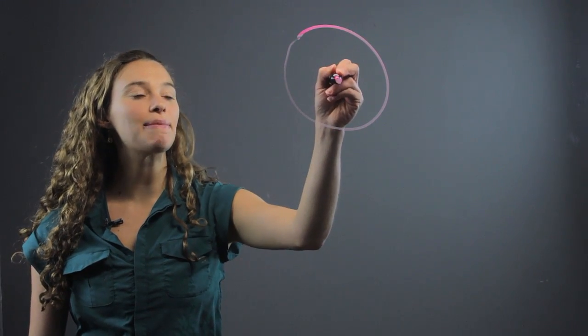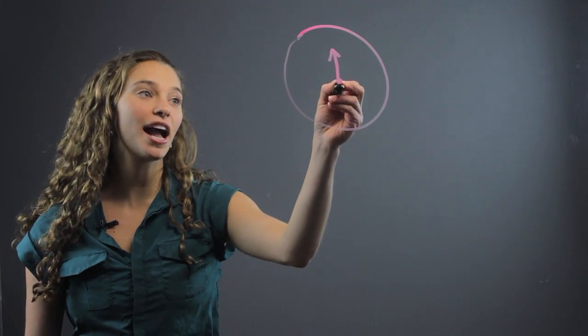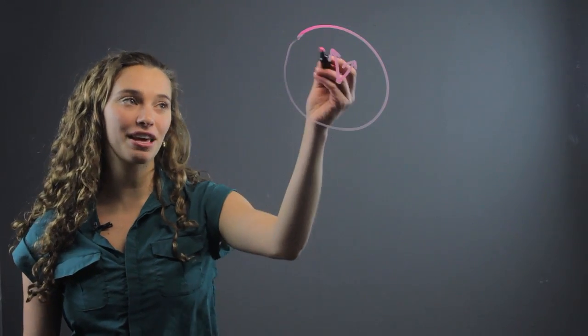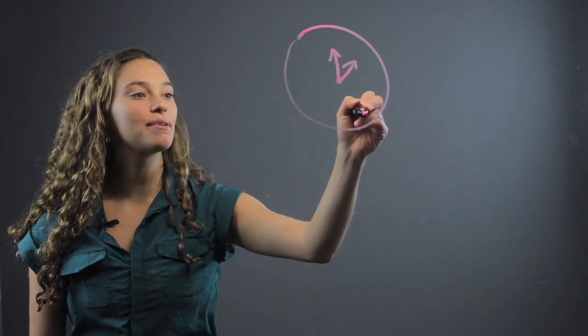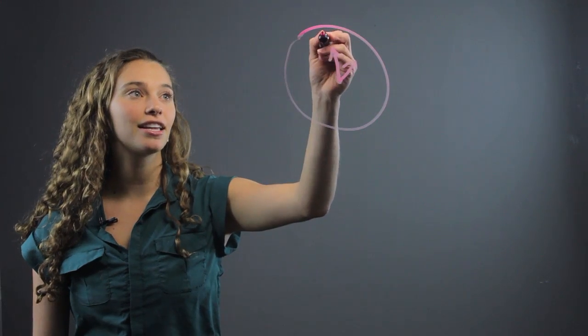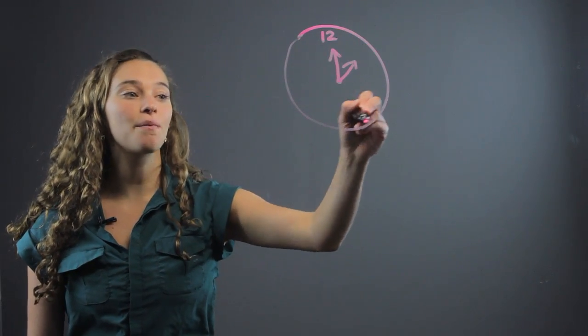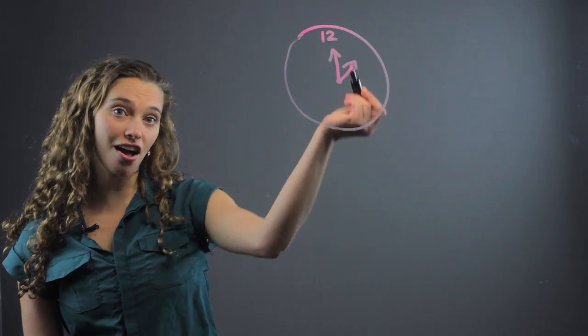You're going to have to teach the students about the minute hand and the second hand and how they move. You're going to have to teach them the different increments, how it goes to 12 and where the different numbers are on the clock.